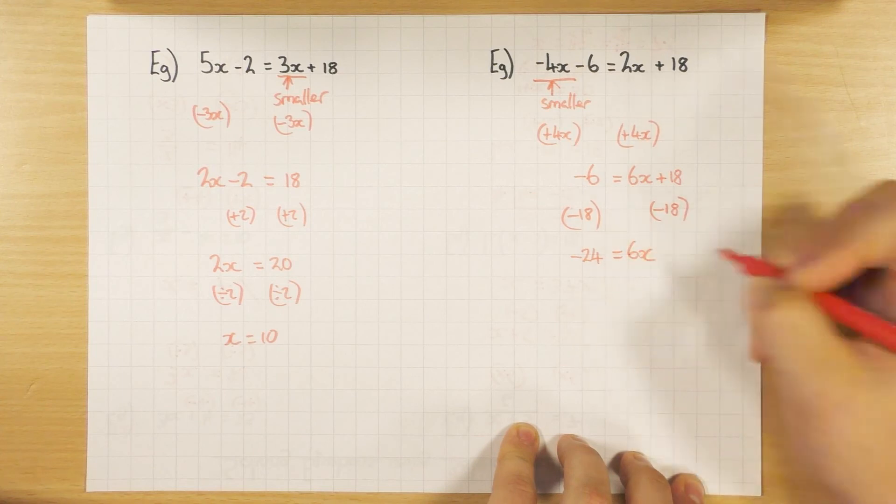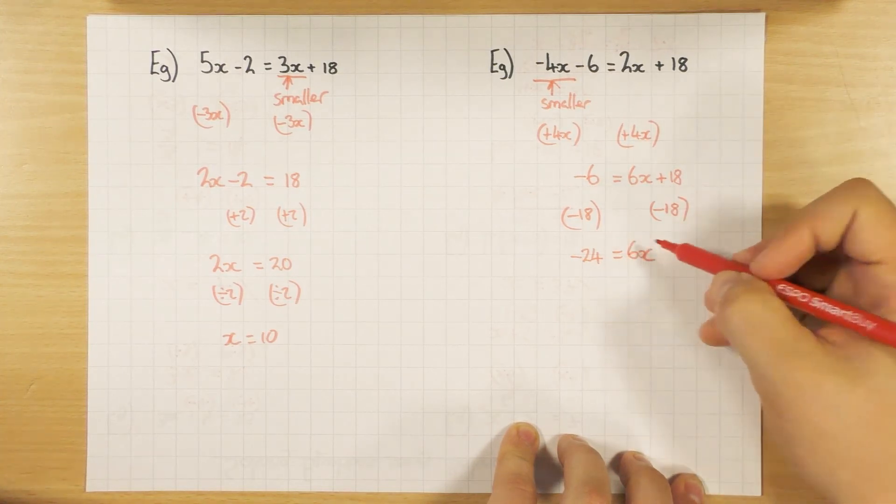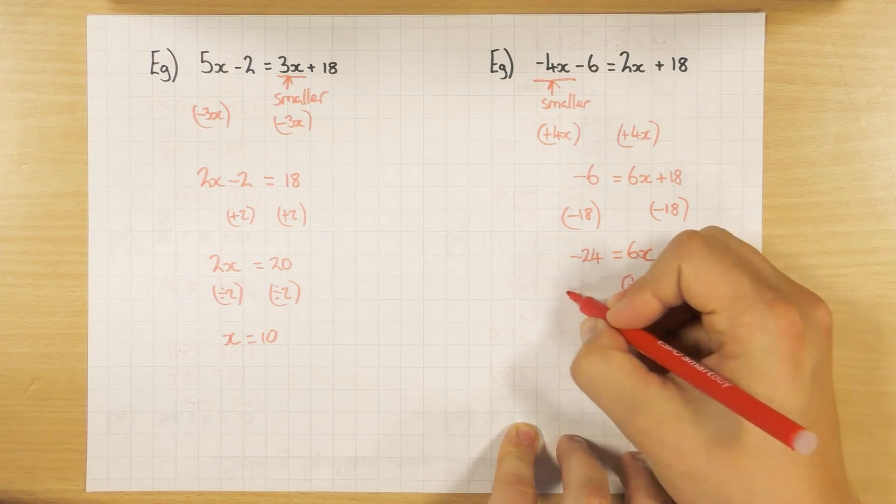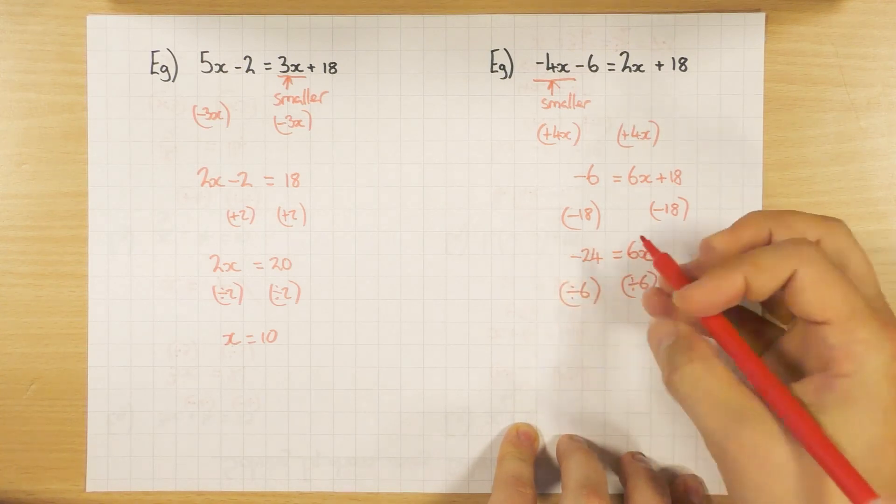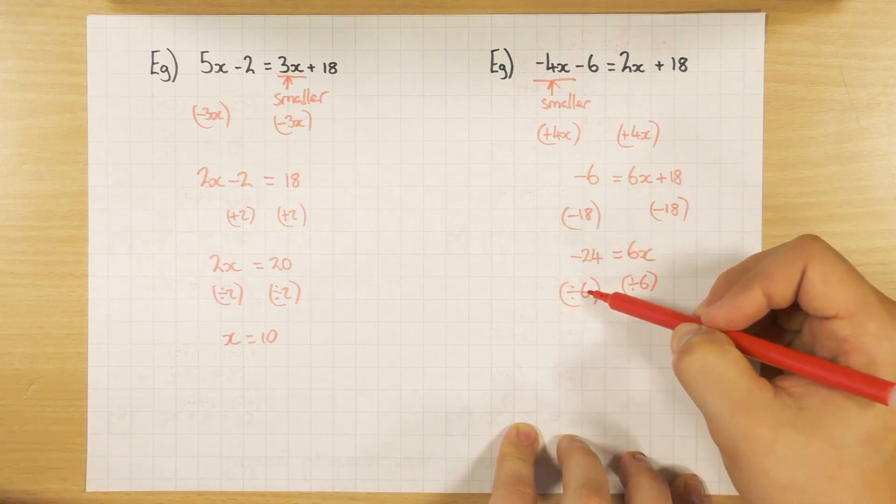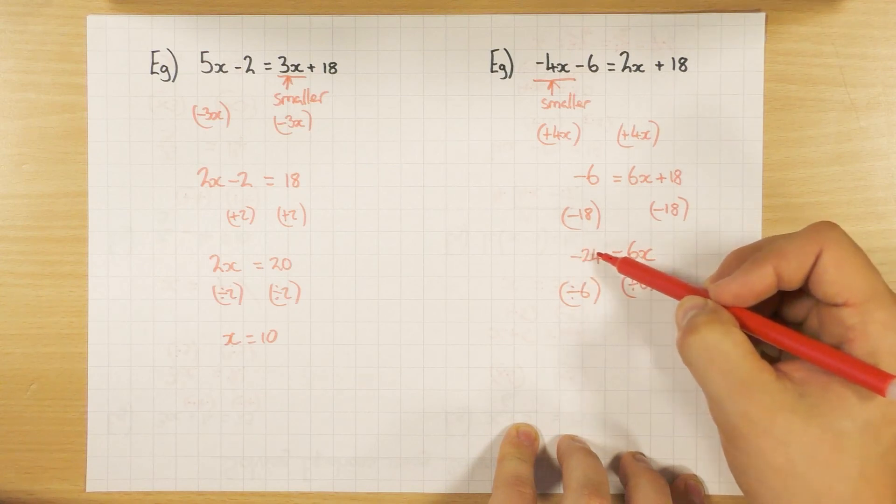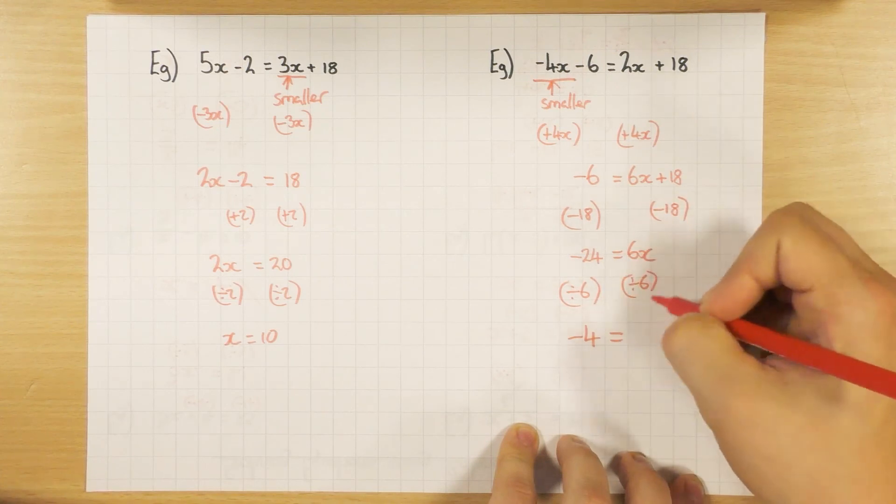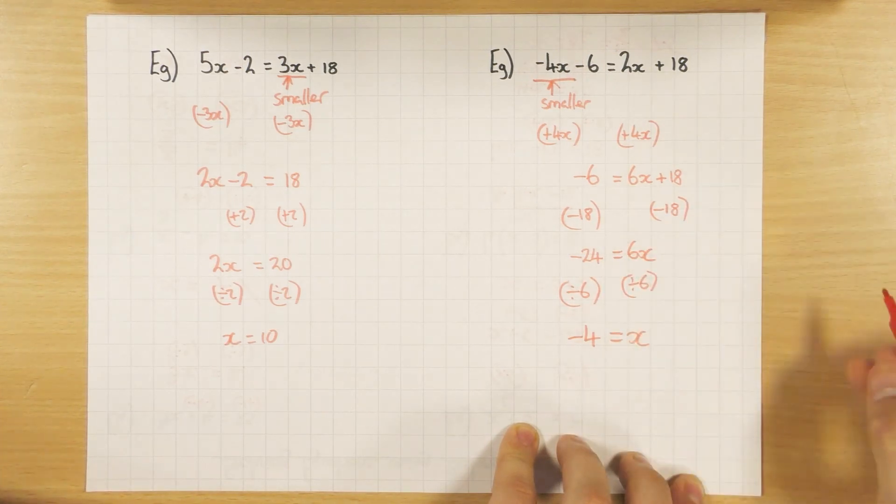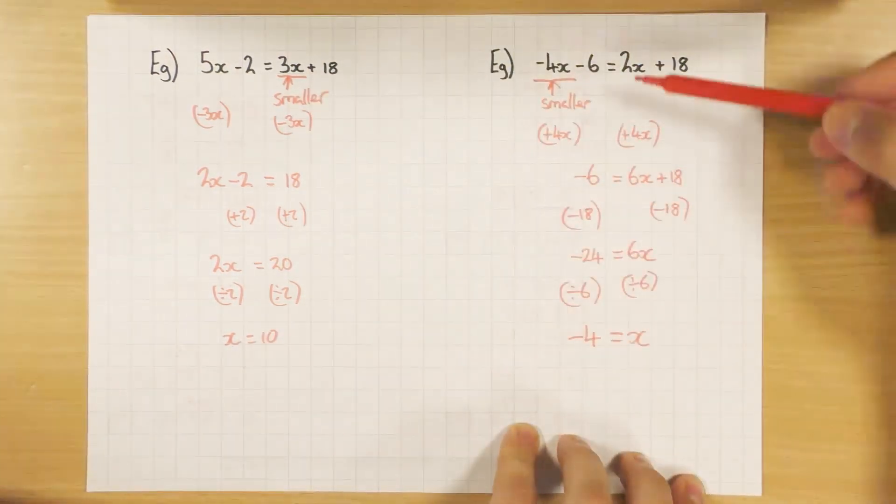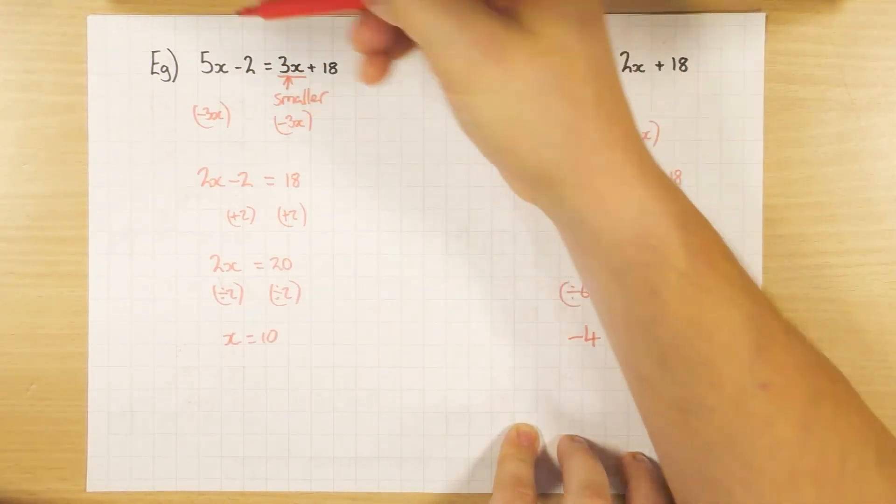Again, I want to get rid of that 6. It's currently times in. So I'll do the opposite and divide both sides by 6. So minus 24 divided by 6. Well, think about it. 24 divided by 6 is 4. So minus 24 divided by 6 must be minus 4. And obviously 6x divided by 6 leaves us with x. So again, that is our answer there.